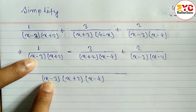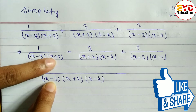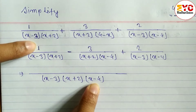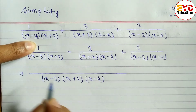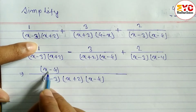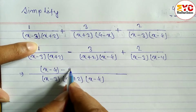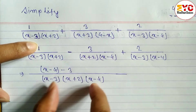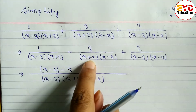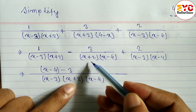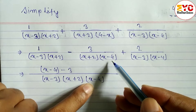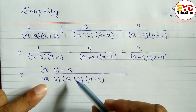Now we divide the denominator by the LCM. For the first term: x minus 3 cancels, x plus 2 cancels — remaining is x minus 4, multiply by 1, so we write x minus 4. For the second term (with numerator minus 3): x plus 2 cancels, x minus 4 cancels — remaining is x minus 3, multiply by 3, so we write 3(x minus 3).